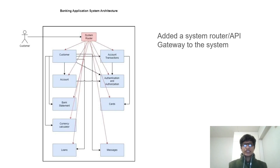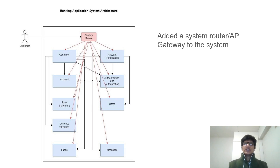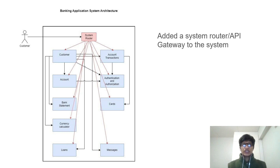Another change has been made on the banking application system architecture. A new router has been added to the system diagram — we can also see it as an API gateway. This enables routing requests to the necessary services in the architecture.